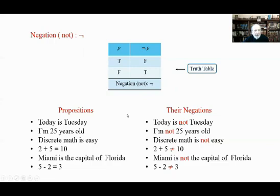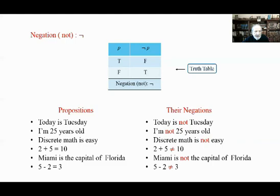Here are some negation examples. 'Today is Tuesday' becomes 'Today is not Tuesday' — you don't say 'Today is Wednesday' because you might also be wrong. 'I am 25 years old' becomes 'I am not 25 years old.' 'Discrete math is easy' becomes 'Discrete math is not easy.' '2 plus 5 equals 10' becomes '2 plus 5 is not equal to 10.' 'Miami is the capital of Florida' becomes 'Miami is not the capital of Florida.' '5 minus 2 equals 3' becomes '5 minus 2 is not equal to 3.'